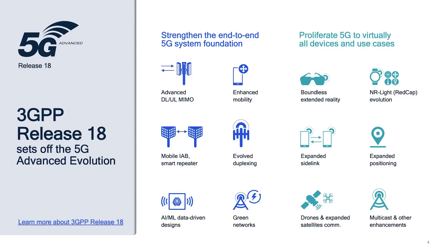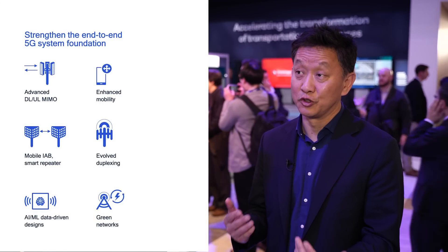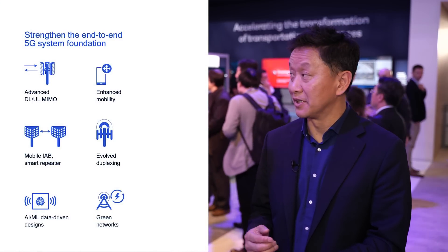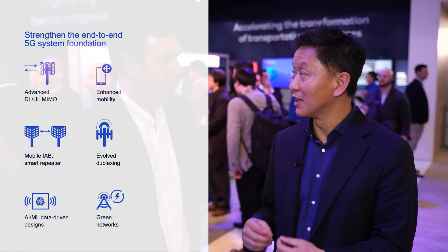5G Advanced has two components. One component is on the foundational research that's actually going to bring some new air interface innovation. On the part of foundational research, it's almost like a pre-6G study. Some of the items include full duplex and ML-based air interface. Some part of it will be realized in 5G Advanced in the next five years, and some part of it will actually be commercialized in 6G.